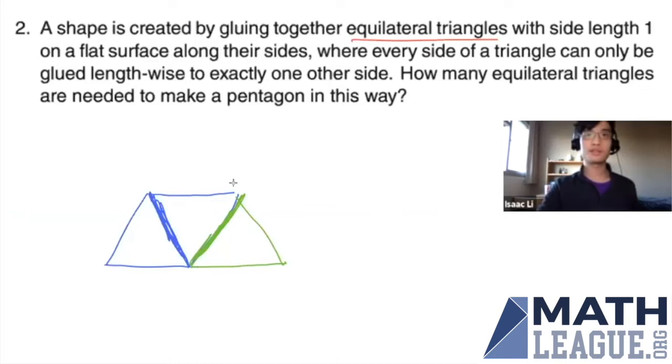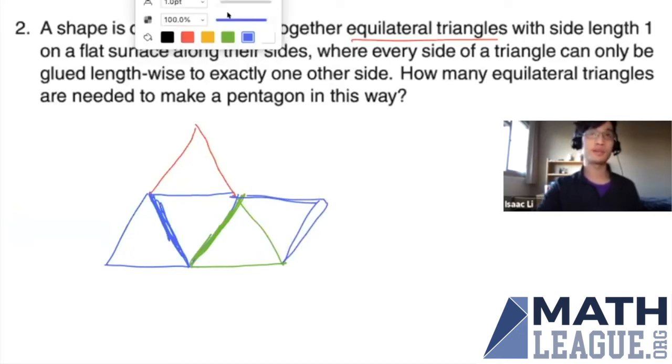So let's try adding another triangle. And there are a few ways we can do it. We can add it here, which creates a triangle. So we're not going to do that. We could also add a triangle right here, which creates a parallelogram with four sides. That's not going to work either.